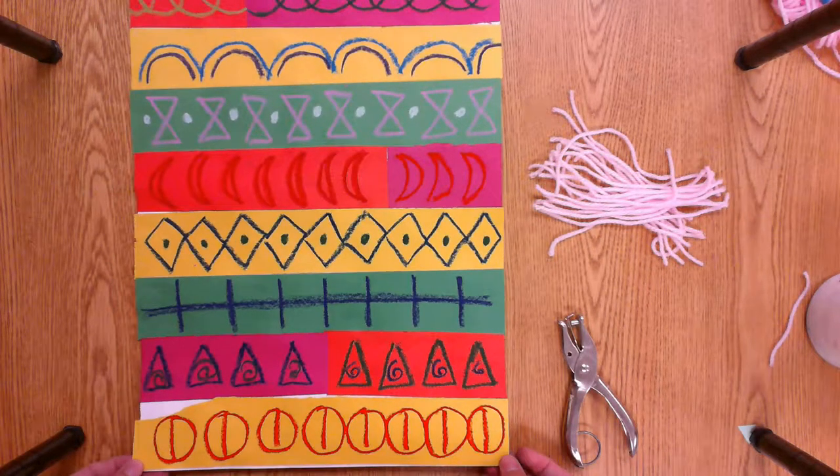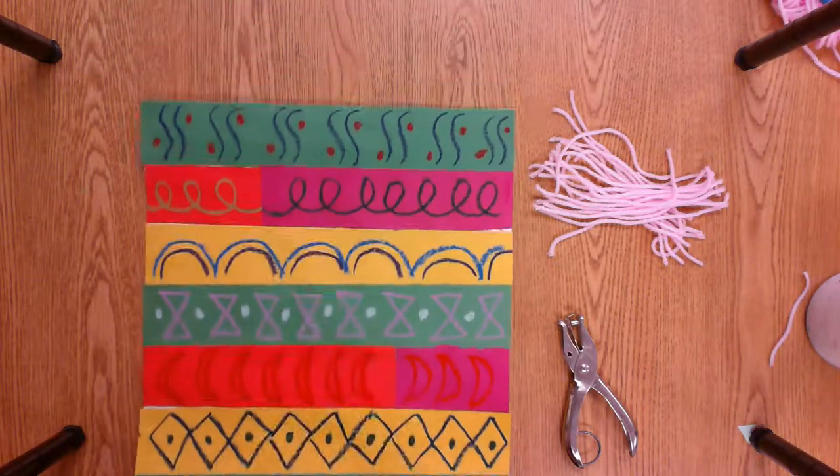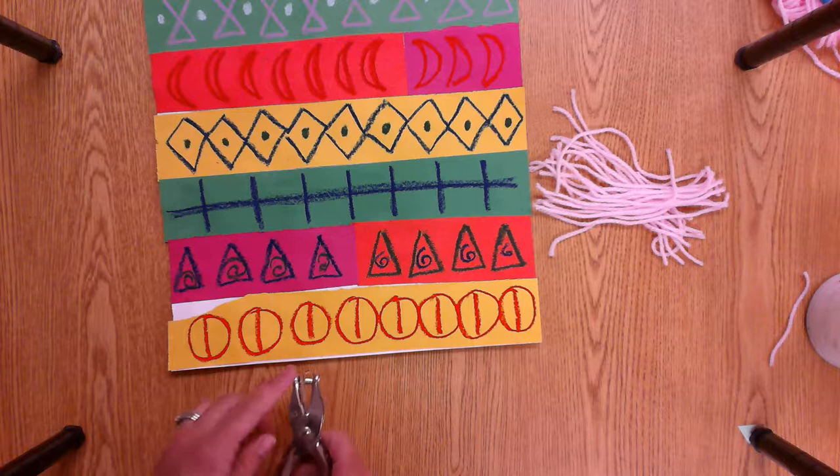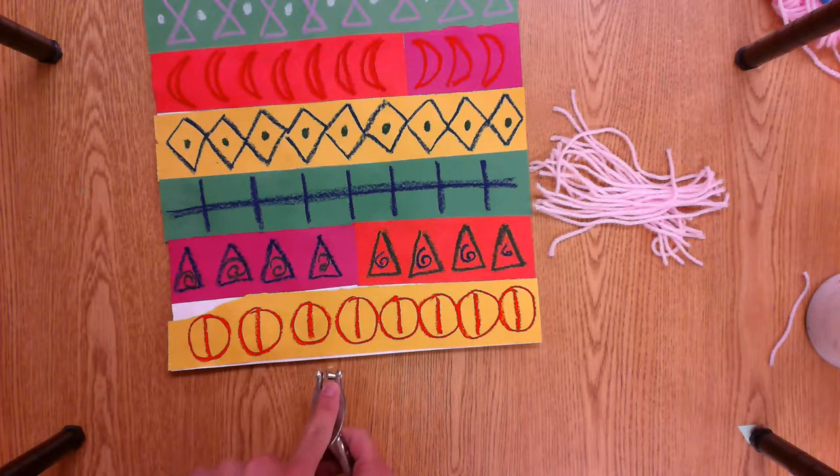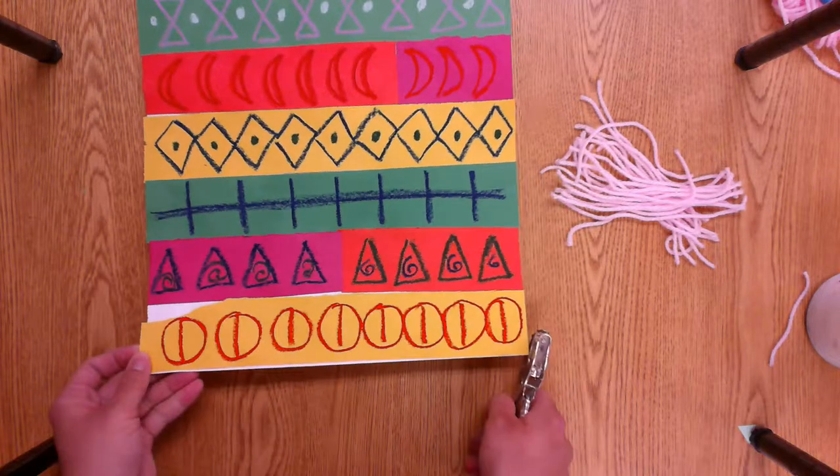So we're going to hole punch on the short side. So right here is the short side, and then the other short side is up here. So when I'm using my hole puncher, I stick the paper in here underneath that little tooth, I call it, like it's biting. And I'm going to make 12 holes.